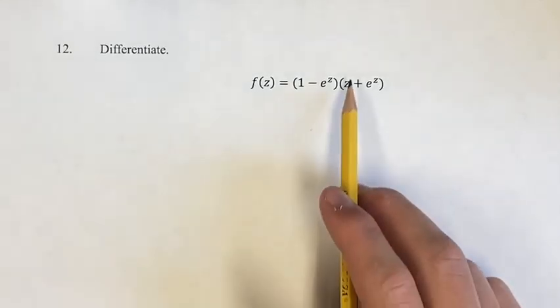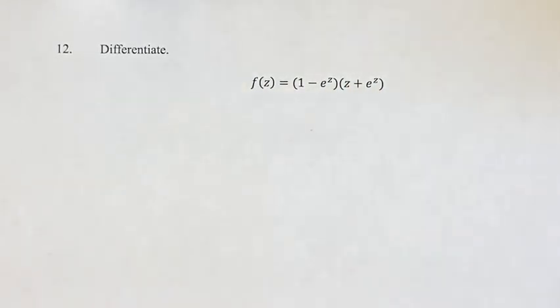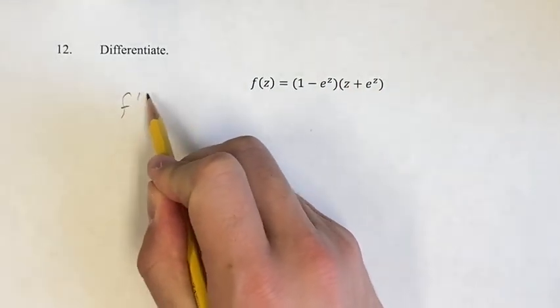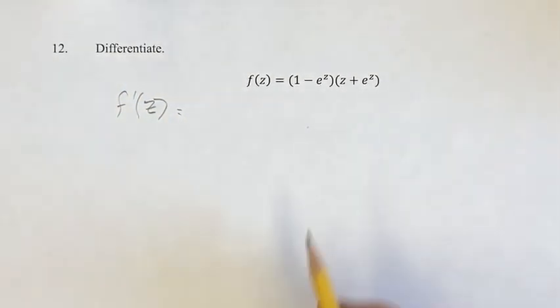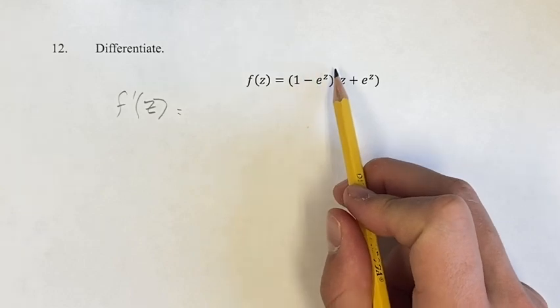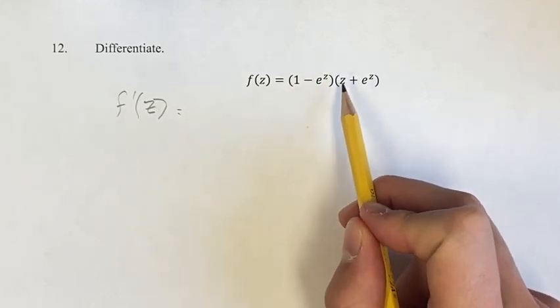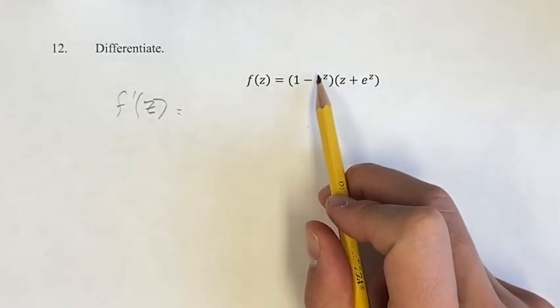So we're going to do the product rule, and we're multiplying this term by this term, and we're going to find the derivative of that. The way the product rule works is you do the first term times the derivative of the second term plus the second term times the derivative of the first term.